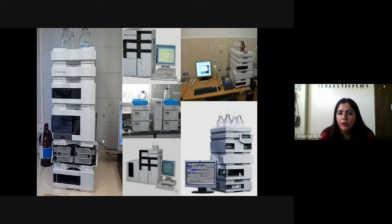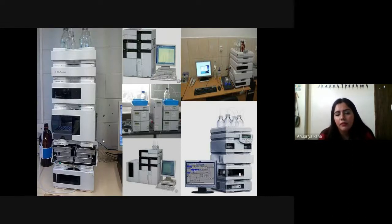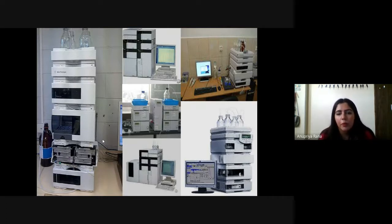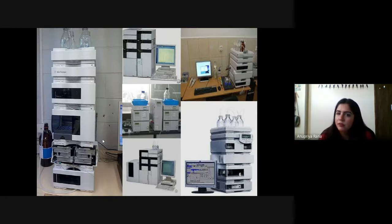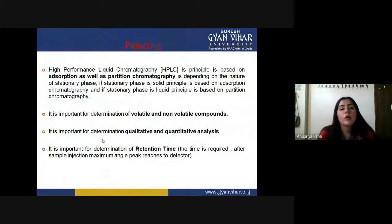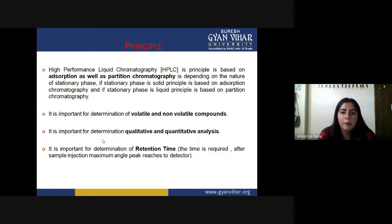This is how the HPLC machine looks. It is not a simple kind of instrument like column, TLC, or paper chromatography. It involves several processes and can have four to five detectors inside a single instrument. The HPLC involves high pressure pumping of the mobile phase and can sometimes work with a duplex column. There are many valves that regulate the pressure of the mobile phase inside the column.